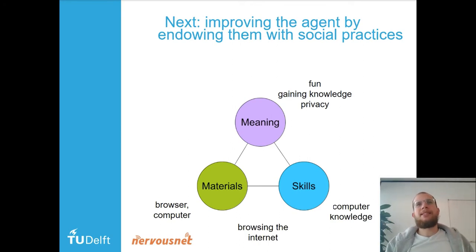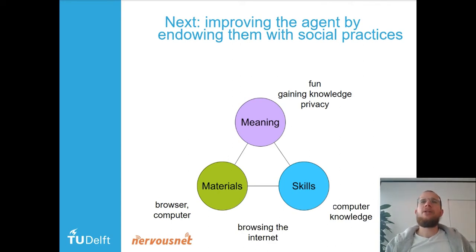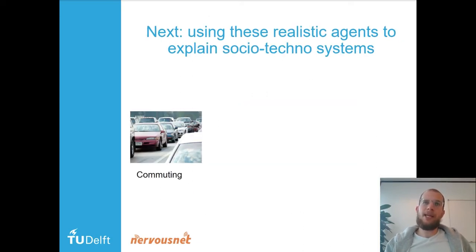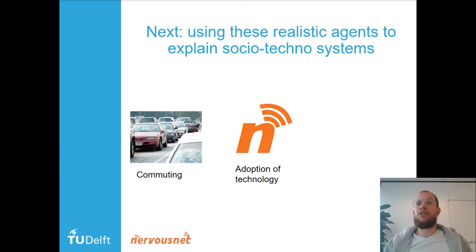And maybe in the future, there's a meaning of privacy attached to it. We believe that this social practices framework gives us a simple concept to easily define the social complexity we want to model, to make these agents more realistic. When tested and validated, we can use them to explain social technical systems — for example, commuting, or the adoption of technology such as NervousNet, the project I am part of.